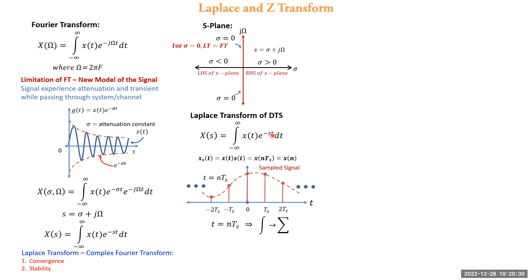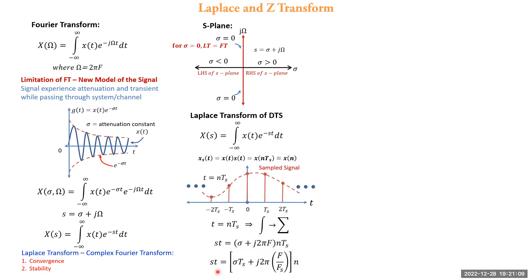Now e^(−st) can be computed by substituting the value of s. Here s = σ + j2πf, and t is substituted as nT_s. Since T_s = 1/f_s, when moved inside, the effective term st = σT_s + j·(2πf/f_s)·n. So f/f_s is called the digital frequency or normalized frequency.